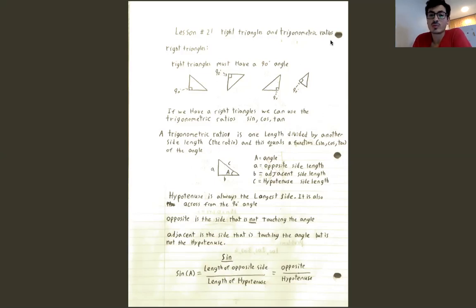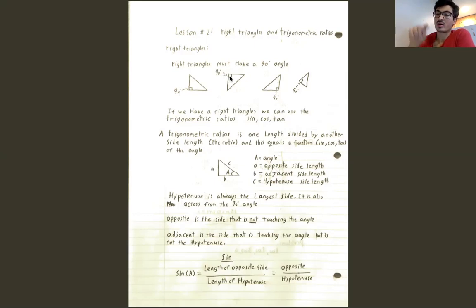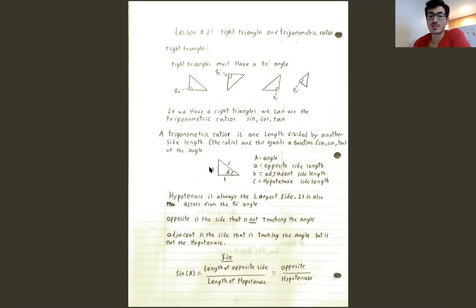Jumping in — when we're looking at trigonometric ratios, you need to have a right triangle. Without a right triangle the ratios will not work. A right triangle means that one of the angles must be 90 degrees. I've put a bunch of triangles here — they're pretty much all the same triangle, just orientated differently. As long as you have one angle that's 90 degrees, we indicate that with a little square symbol in the corner.